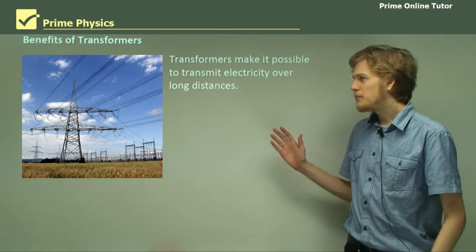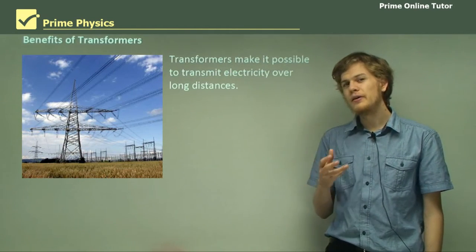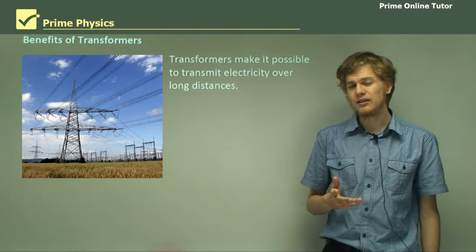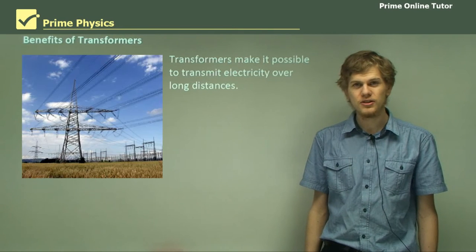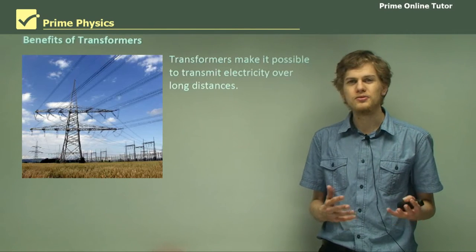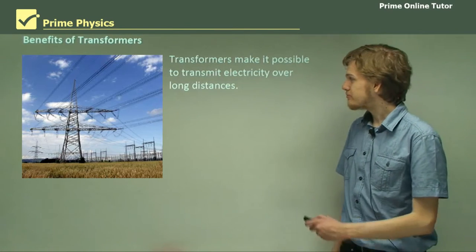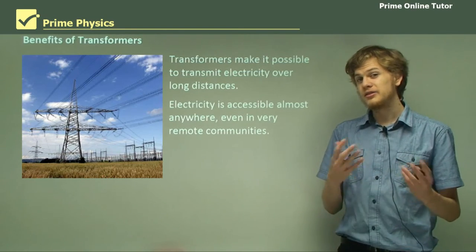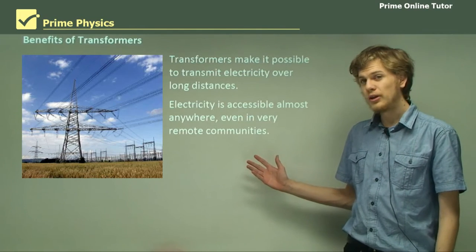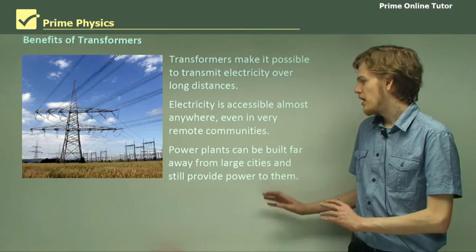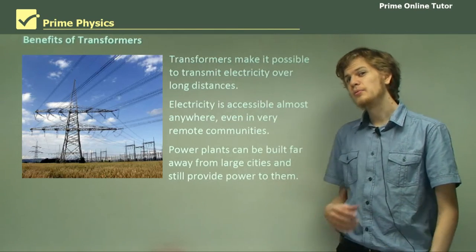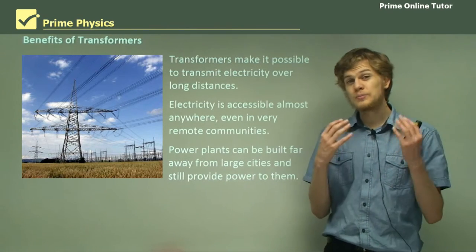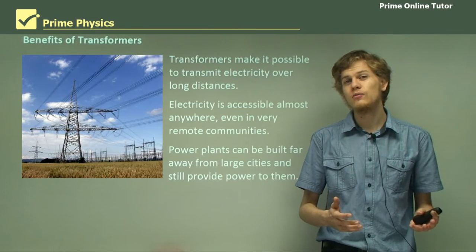So transformers make it possible to transmit electricity over very long distances. They are in fact the main reason that we use AC electricity instead of DC electricity. DC can't be transformed. Electricity is accessible and it's accessible even in very remote locations. And it also means that power plants can be built long distances away from where we actually need the electricity just because we can transmit it long distances without losing any of its energy.